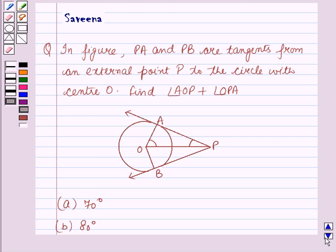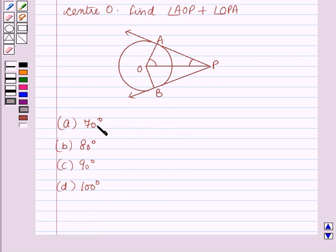The options are: A) 70 degrees, B) 80 degrees, C) 90 degrees, D) 100 degrees.